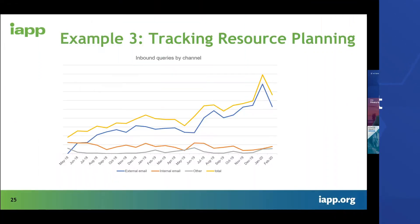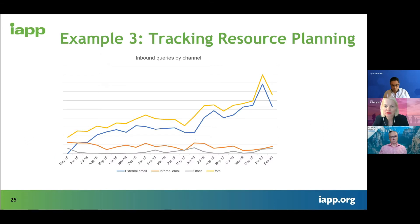This is inbound queries from users by channel. The blue graph is external email, orange is internal email, gray is other, and yellow is total — so the total number of emails coming in through the DPO inbox, for example.